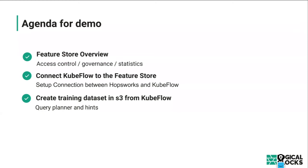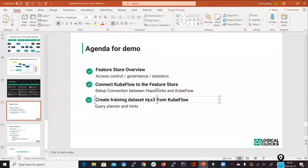Let's go to the demo. I'm going to give you an overview of the feature store: how we do access control, governance, and statistics. I'll show how we connect Kubeflow to the feature store, and how to create a training dataset from Kubeflow. Before jumping into the demo — if you want to try out Hopsworks, hopsworks.ai is a managed platform currently on AWS. It's point and click — you can spin up a cluster within five minutes, and connect it directly to platforms like SageMaker and Databricks. It's currently free to use.